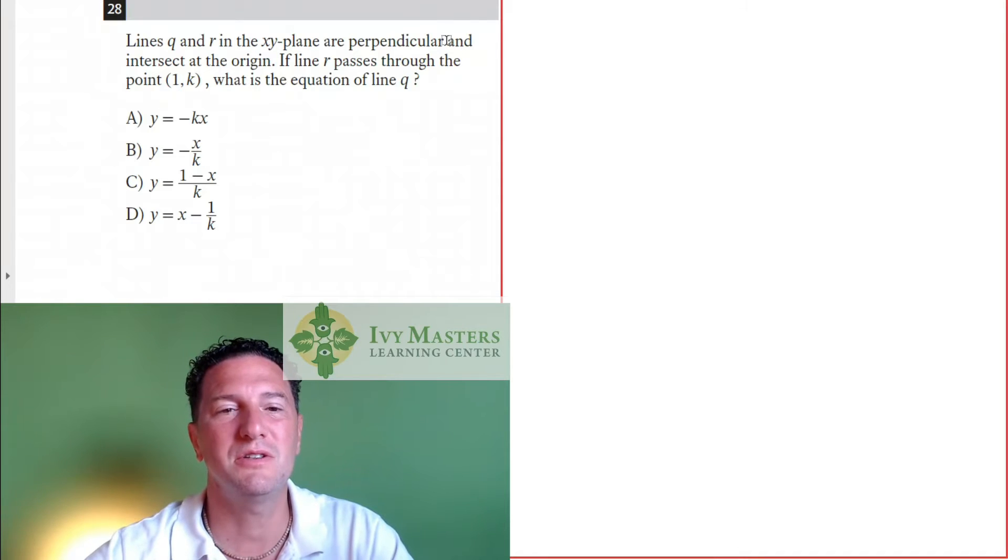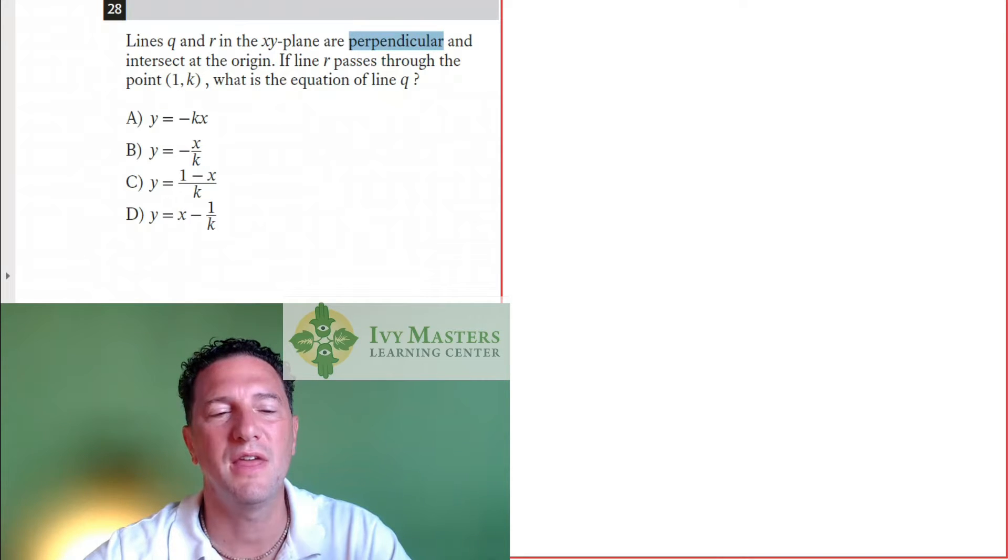Remember, as soon as you see the word perpendicular, you see it right over here, then what you know is that your slopes are going to be opposite reciprocals. So in other words, if you have got a slope of two-thirds, perpendicular slope is going to be negative three over two. Flip the fraction, multiply by negative one.